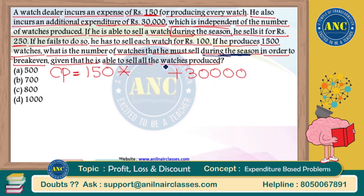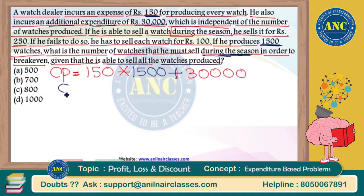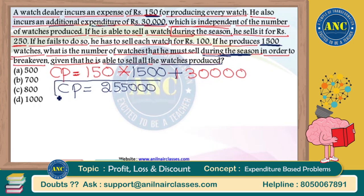For one watch, 150 rupees is invested. With 1500 watches produced, 150 × 1500 goes out from the pocket as cost price. Additionally, 30,000 rupees is the extra expenditure. So total cost price is 150 × 1500 + 30,000.